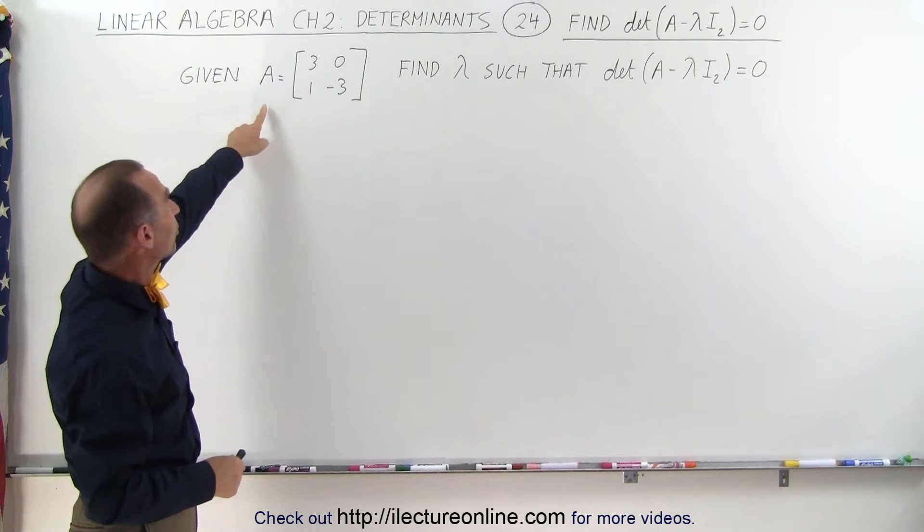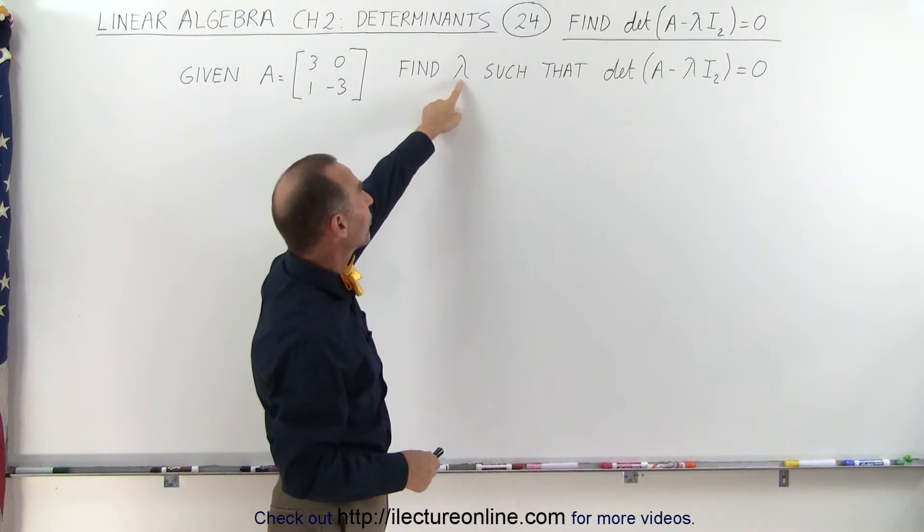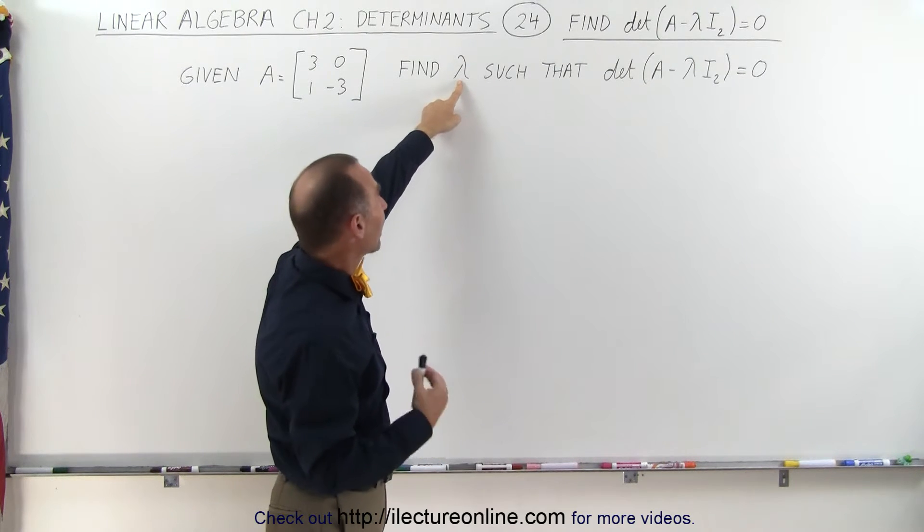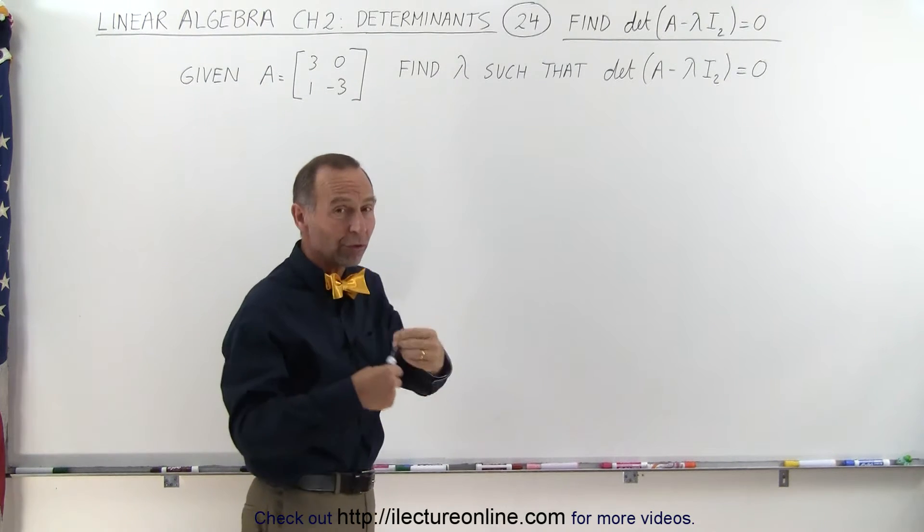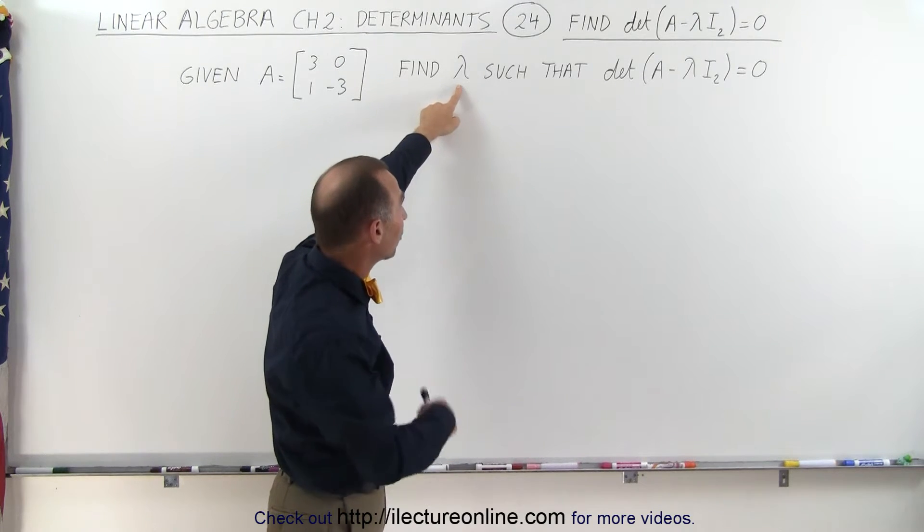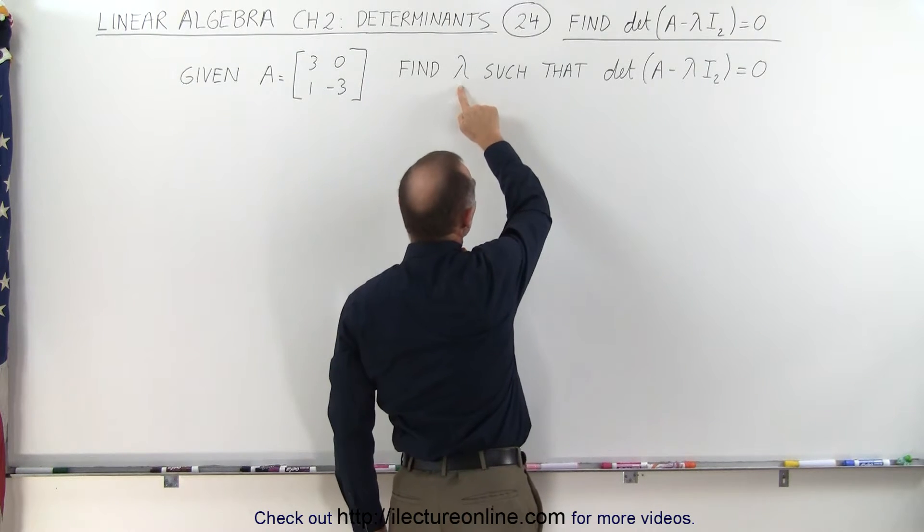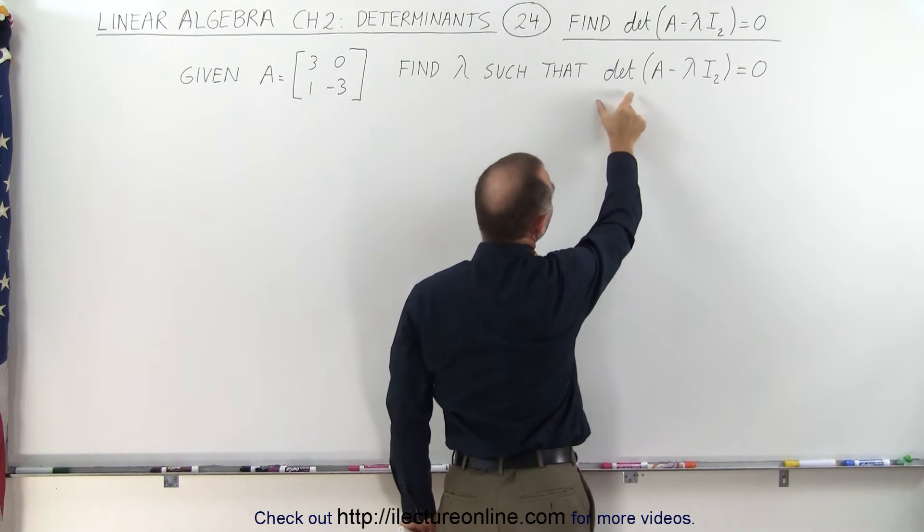Let's say we have a two by two matrix A, very simple, and here they're asking us to find the value for this. This is the symbol lambda, and that's a symbol usually used for eigenvalues, but that's not what it means at this point, so just assume that this is just a constant.